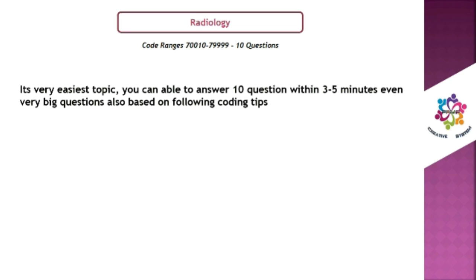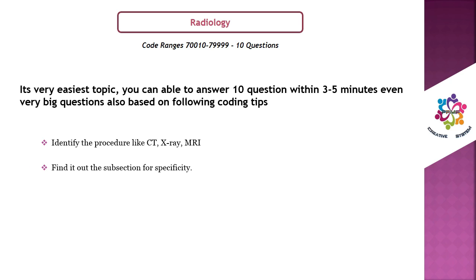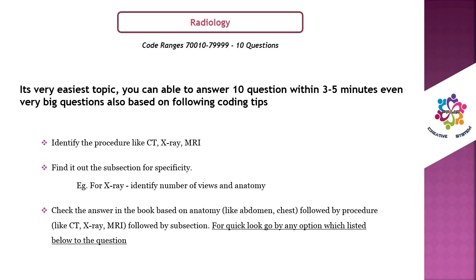Coding tips: First, identify the procedure — like CT, X-ray, or MRI. Then find the subsection for specificity. For X-ray, identify the number of views and anatomy. Finally, check the answer in the book based on anatomy (like abdomen or chest), followed by procedure (CT, X-ray, MRI), followed by subsection like number of views. For a quick look, go by any option listed below the question.